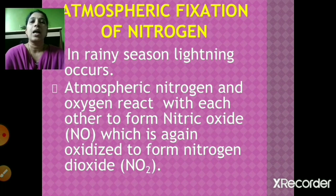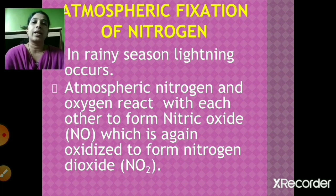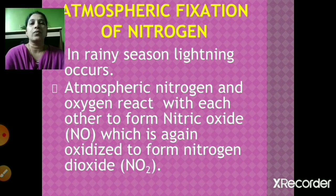Now let's see how atmospheric fixation of nitrogen takes place. During the rainy season, lightning and thundering occur. When lightning occurs, atmospheric nitrogen and oxygen react with each other and form nitric oxide, whose chemical formula is NO.